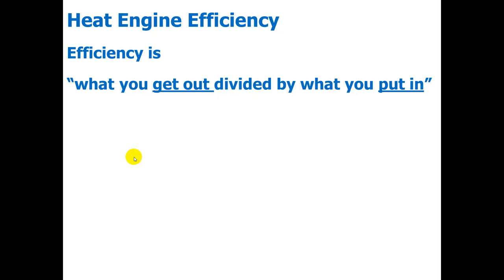We can show the equation this way. Efficiency, we'll call that E, is what you get out, which in our case, we want this engine to do work in pushing our car and accelerating it. And we divide that by what we put into it. We put in heat that comes from the burning fuel.